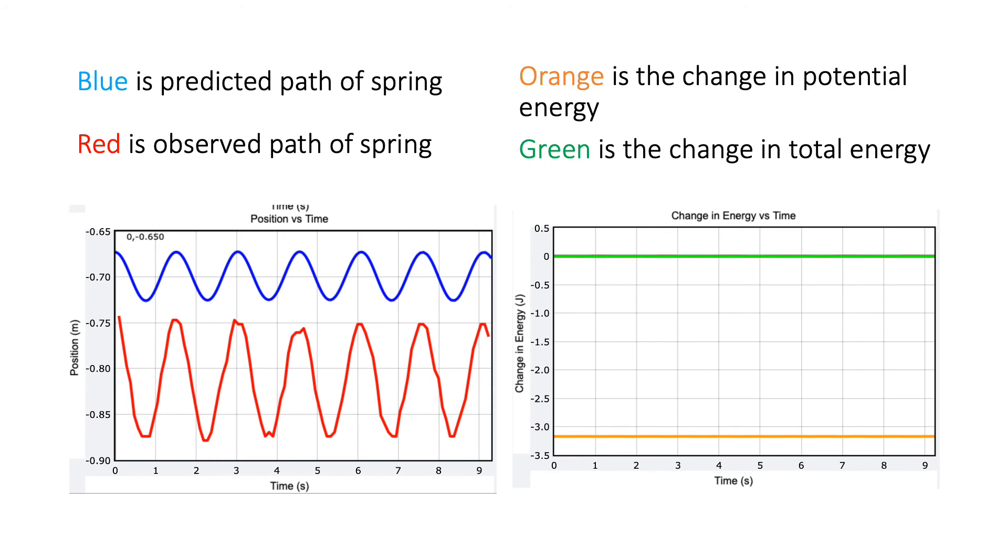On the right graph we have orange as the change in potential energy and green as the change in total energy. I believe my green line is correct because this system is not experiencing any external forces, so this system should have zero change in energy.